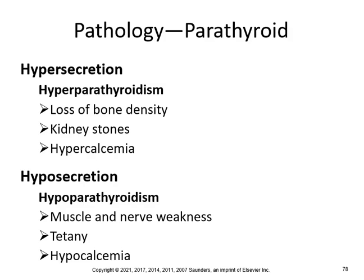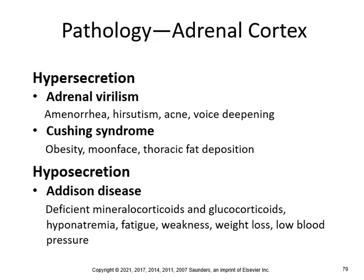Hypersecretion of the parathyroid — hyperparathyroidism — causes loss of bone density, kidney stones, and hypercalcemia. Hyposecretion — hypoparathyroidism — causes muscle and nerve weakness, tetany, and hypocalcemia. Hypersecretion of the adrenal cortex leads to adrenal virilism, with amenorrhea, hirsutism, acne, voice deepening, and Cushing syndrome with obesity, moon face, and thoracic fat deposition. Hyposecretion of the adrenal cortex is Addison's disease — deficiency of mineralocorticoids and glucocorticoids, causing hyponatremia, fatigue, weakness, weight loss, and low blood pressure.